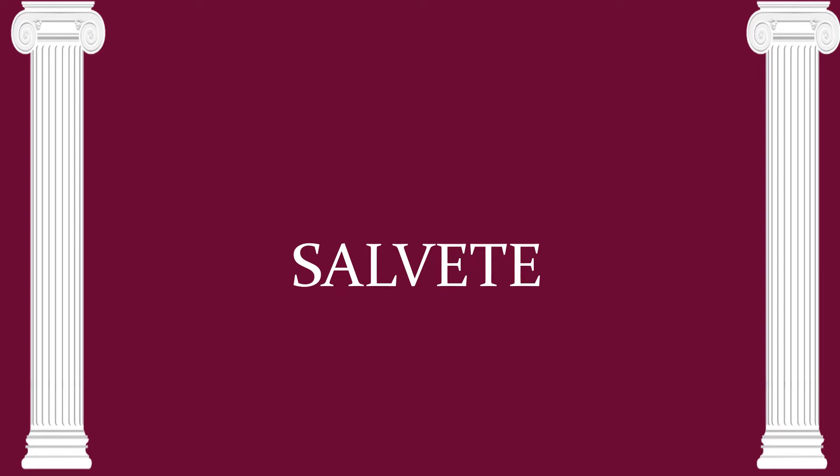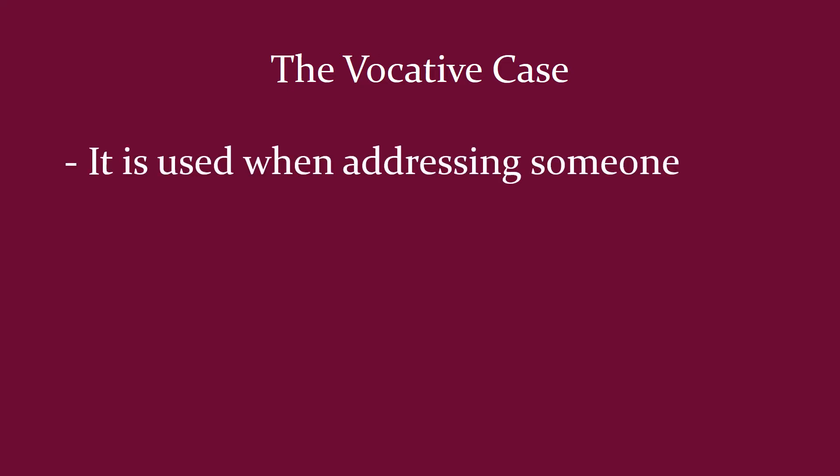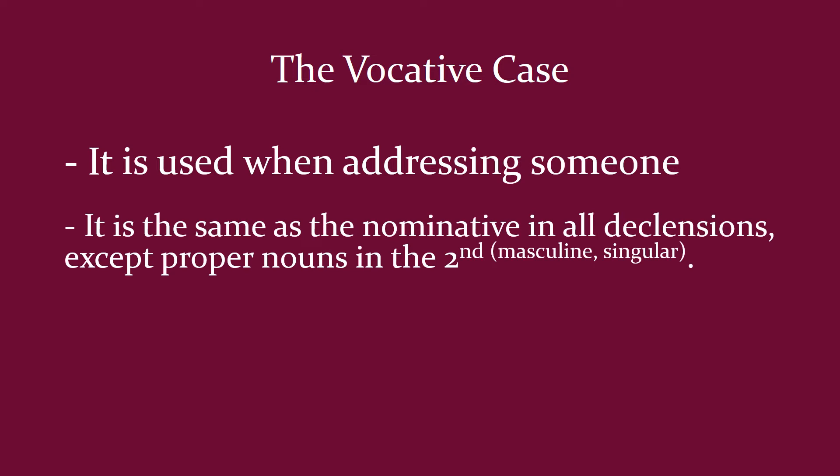Welcome to this short video on the vocative case. We haven't really said very much about it because it's actually very easy — there's only one thing we need to be careful of. The vocative case is used when addressing someone. The vocative is the same as the nominative in all five declensions, except with proper nouns in the second declension masculine singular. There is one other exception which I'll mention briefly at the end.